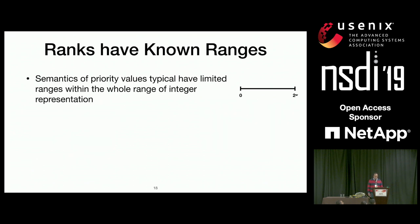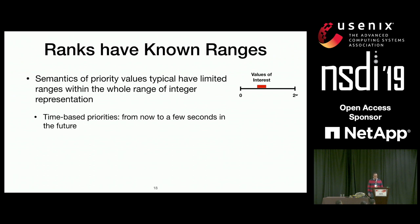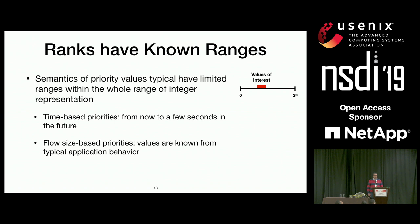The second characteristic is that packet ranks have known ranges. Within the expressiveness of W bits — from 0 to 2^W — we're typically interested in a small range. For instance, in time-based priorities, we're only interested in ranges from now to a few seconds in the future. In flow-size-based priorities, we're interested in a range dependent on typical application behavior. In strict priority, ranges are defined by the policy or network operator.